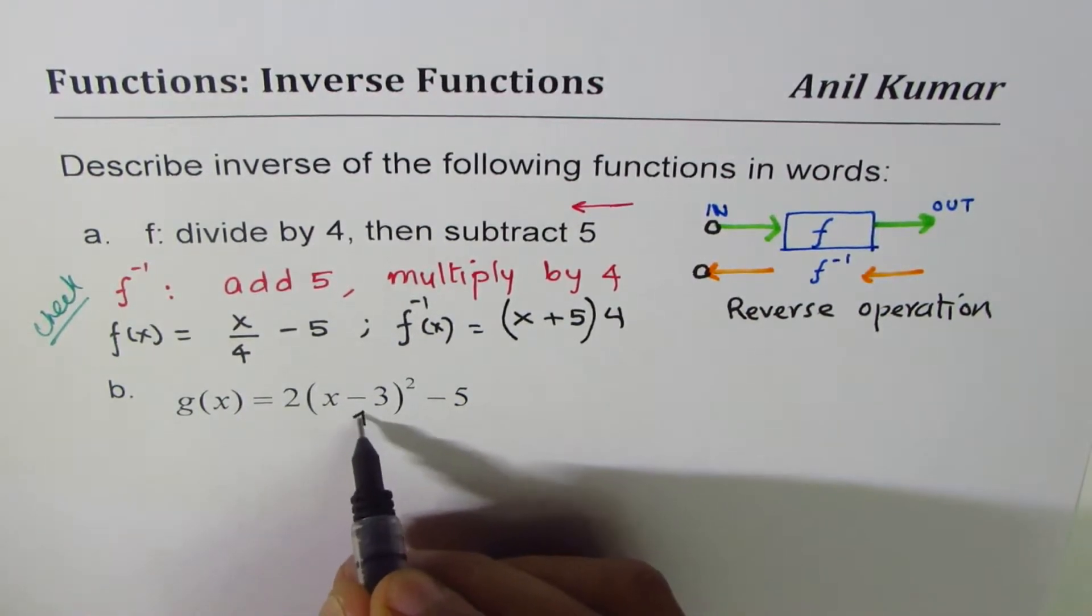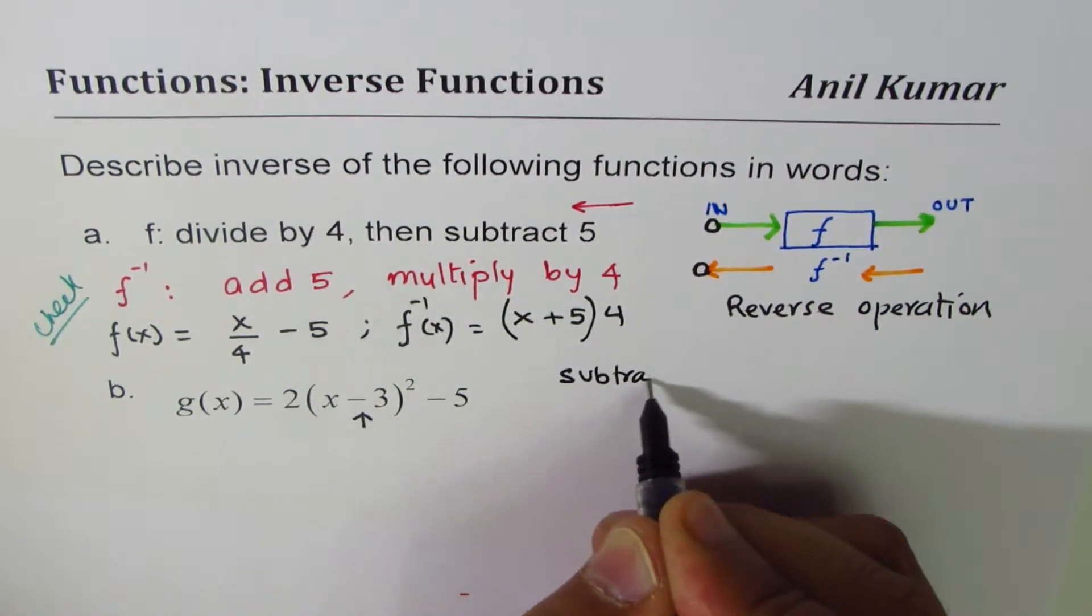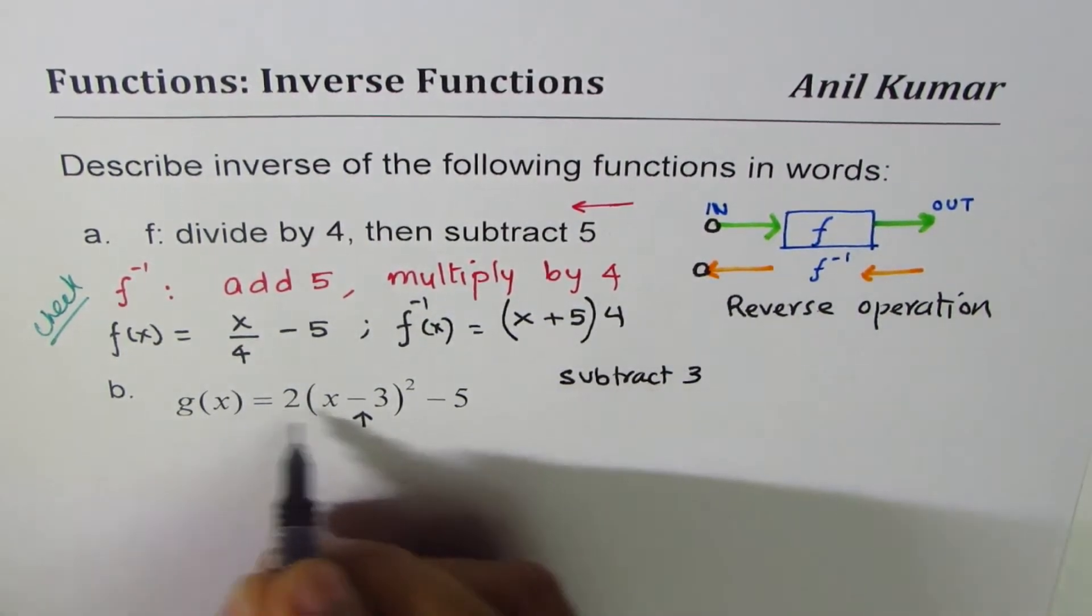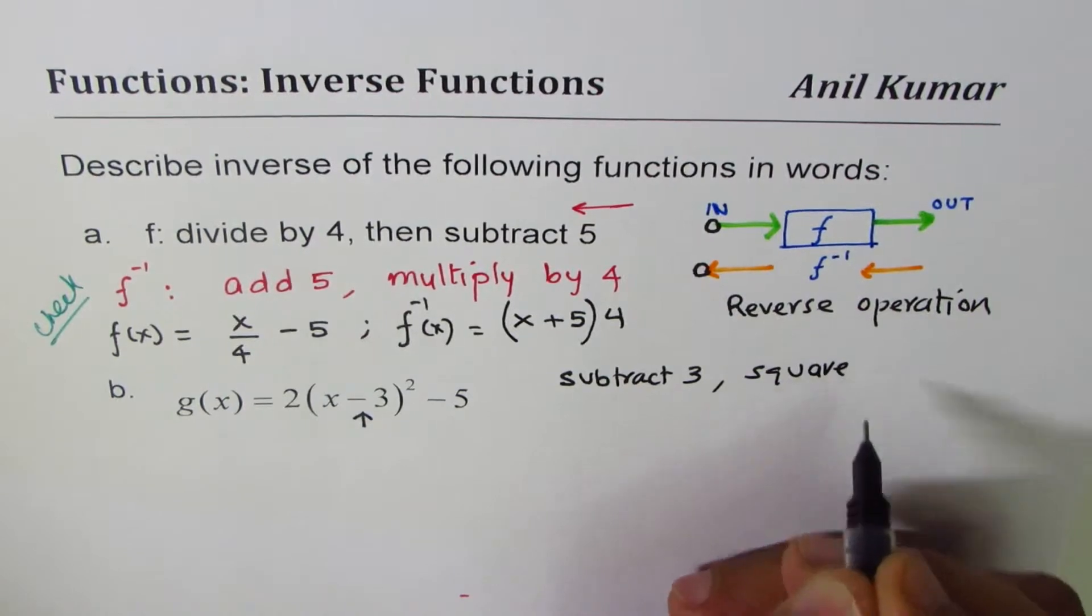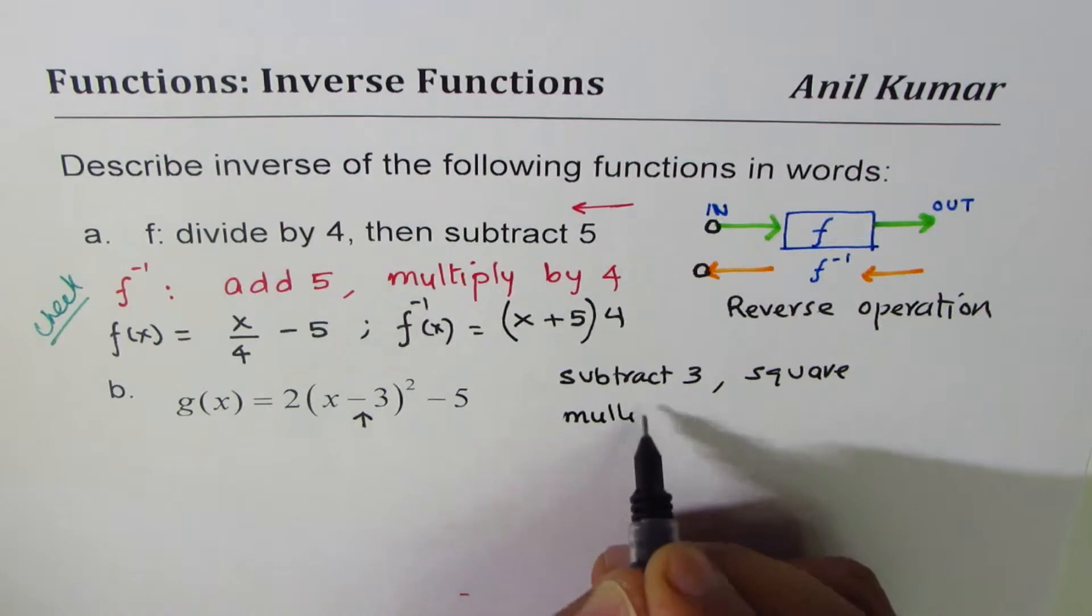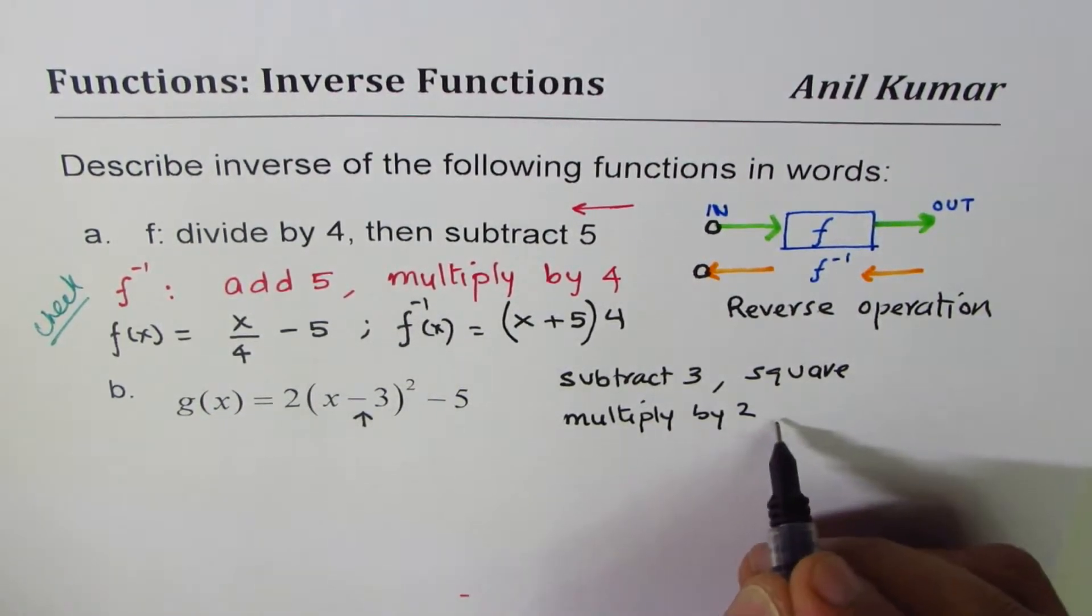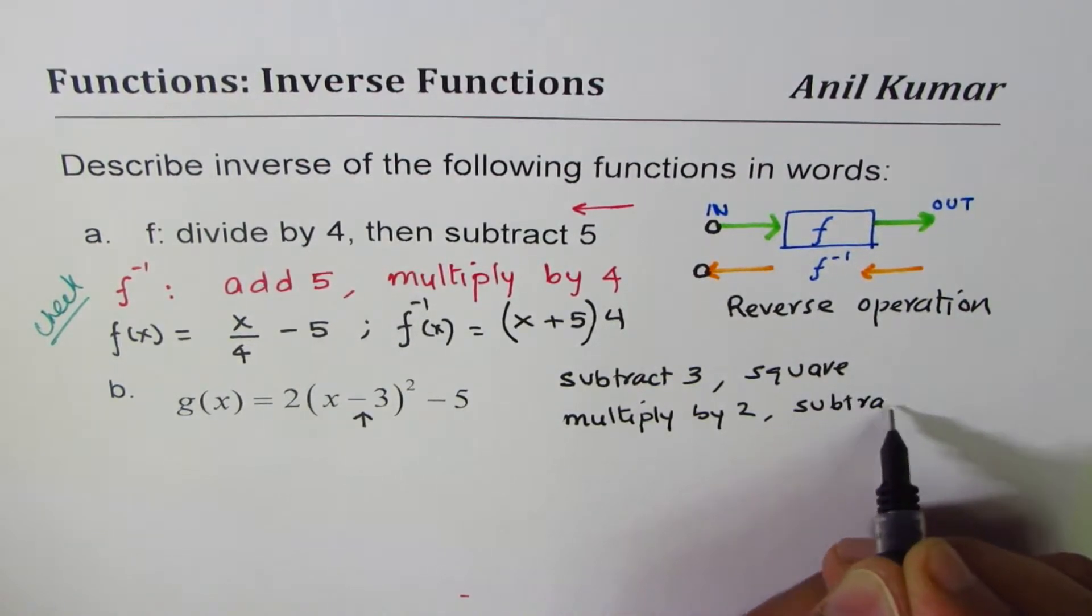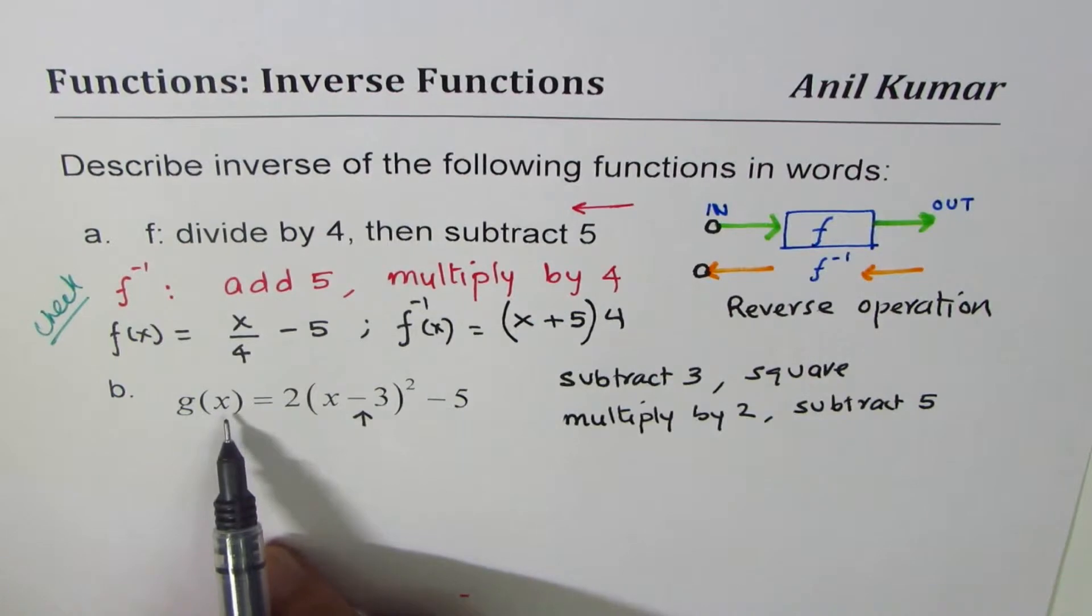You start from inside. So first operation you do is subtract 3, that is the first thing, and then you square that thing, then you square, and then you multiply by 2, then you multiply by 2, and then you subtract 5. Do you see that? These are the operations performed on input to get you this output. That's the function, g(x).